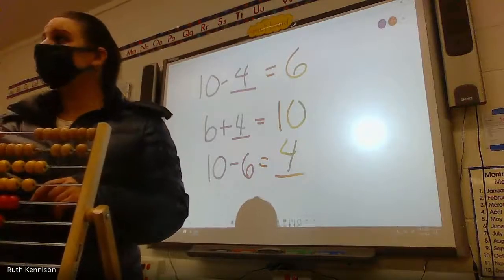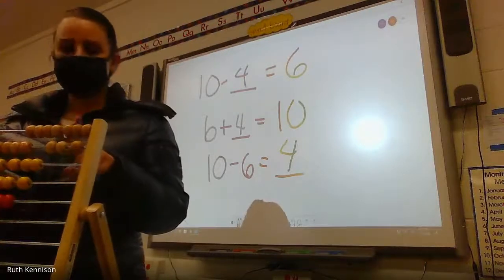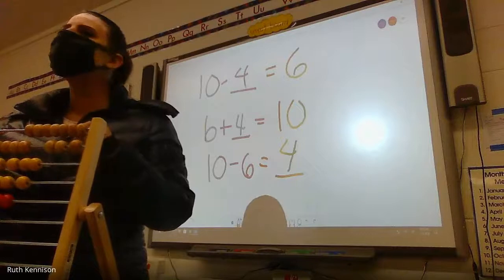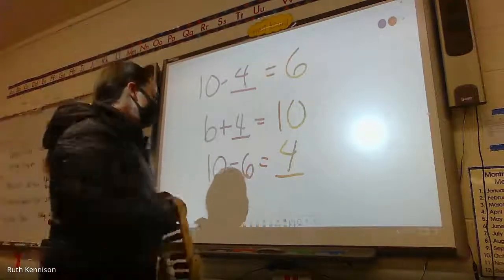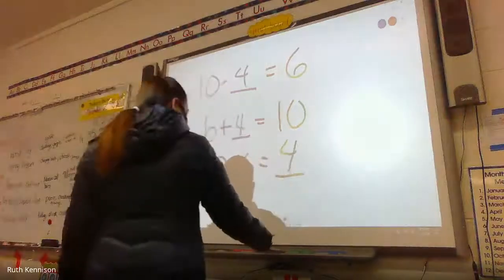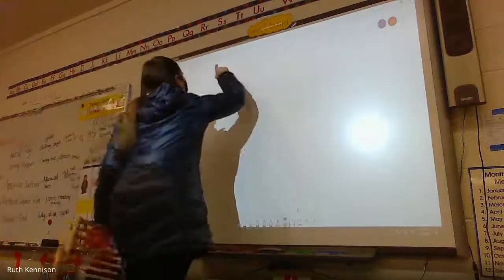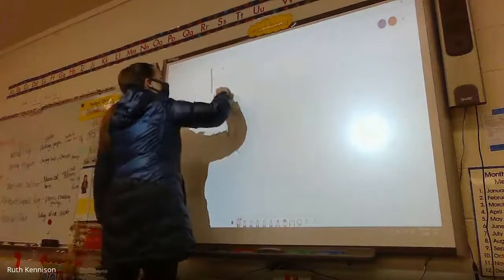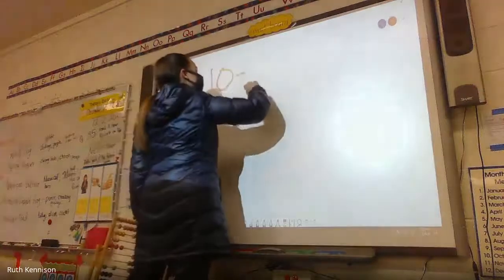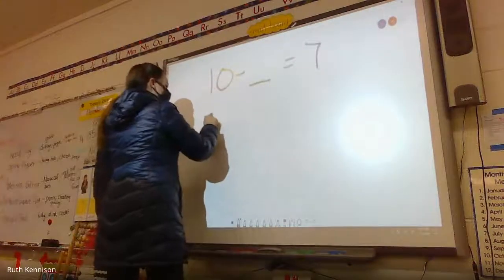So we had ten. Once again, I took some away. Now we have one, two, three, four, five, six, seven. If I have ten and I take some away, I end up with seven. And here's another way we could do it. Let's do it. We're going to say ten.